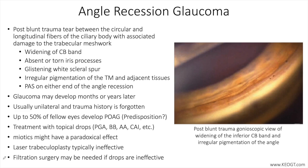On the management side, angle recession glaucoma is treated with topical IOP-lowering medications, and all classes of medications may be used except miotics like pilocarpine, which may exacerbate angle recession in the early stages post-trauma. Steroids may be used to decrease cell and flare, and atropine may be used to enhance comfort. Care should be taken to taper steroids as soon as possible to avoid steroid-induced spikes in IOP.